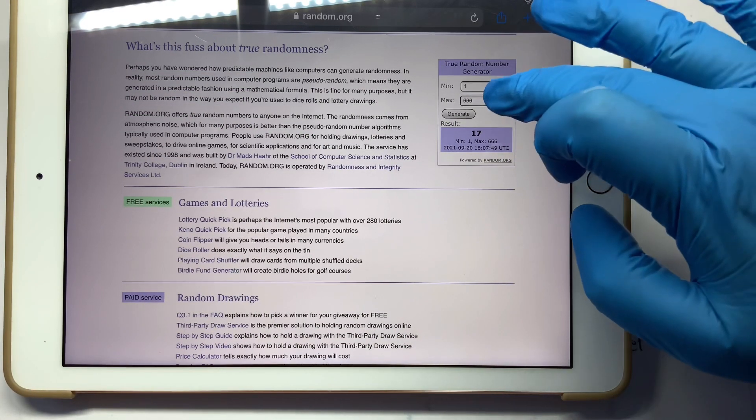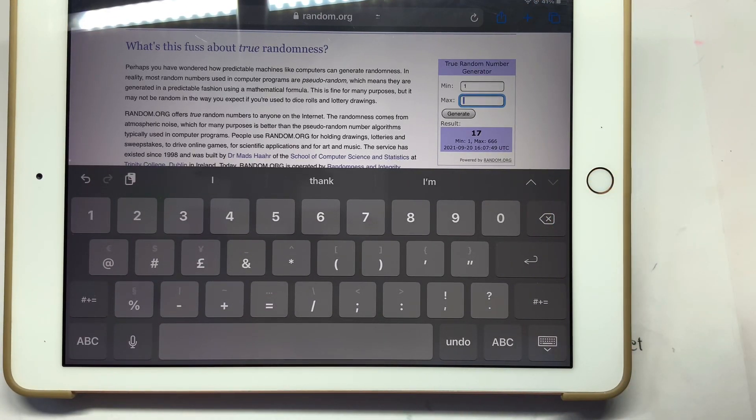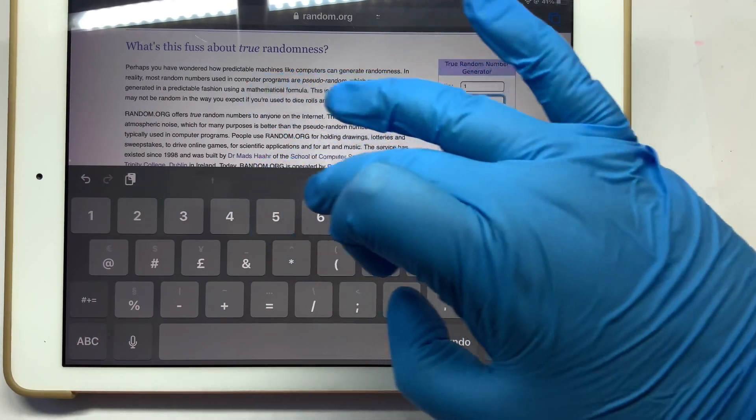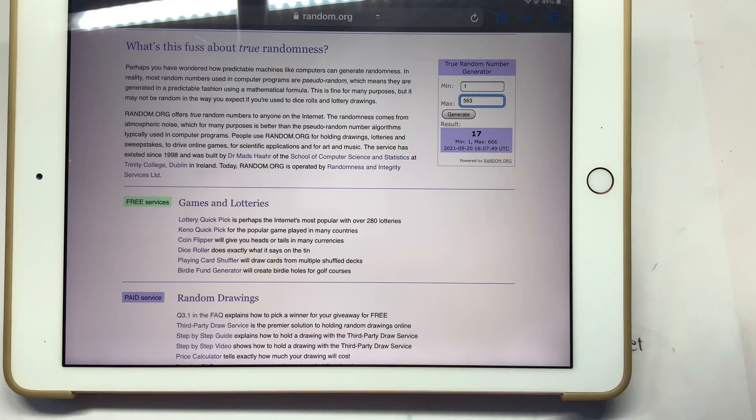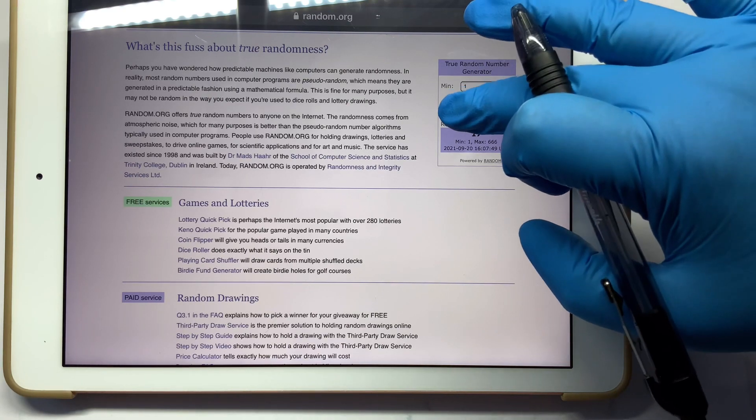How many have we got for the UK people? 563. You just want to show that 563 quickly, there's the last number. You ready? I'm going to go from tenth down to first. This is for the tenth one, number 229.